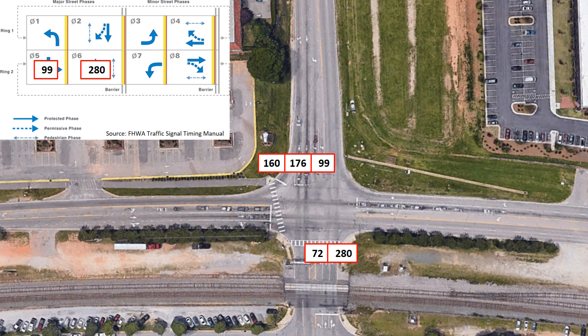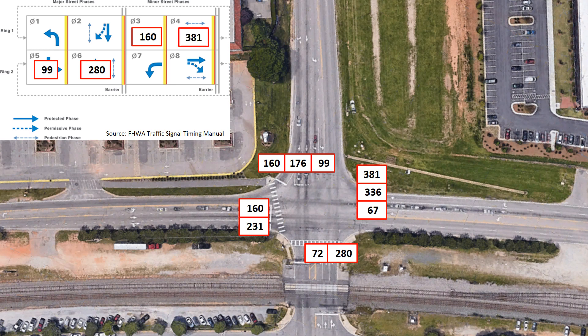Next, looking at the east-west movements: the left turns are 160 and 67. The 160 is larger, so we use that as the critical movement. For the throughs and right turns, the values are 231, 336, and 381 — the largest is 381, so that's the critical movement value. That gives us a total critical flow of 920 vehicles per hour per lane, which is the sum of our critical lane volumes.